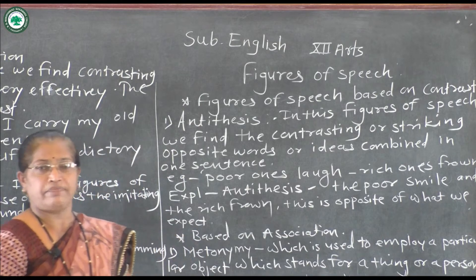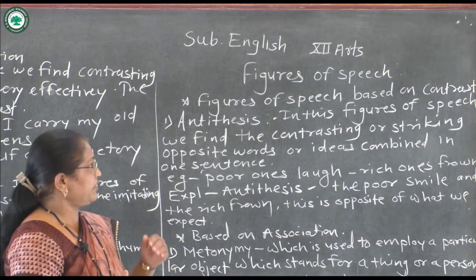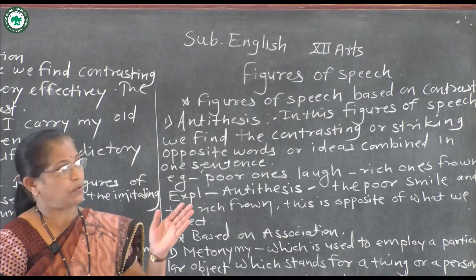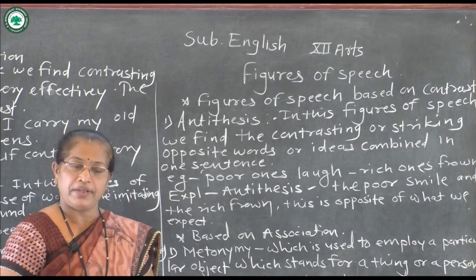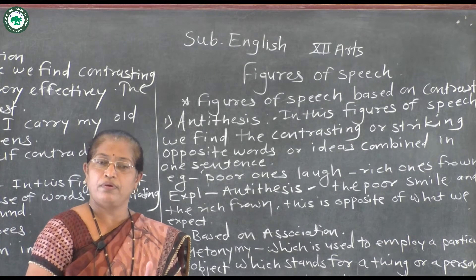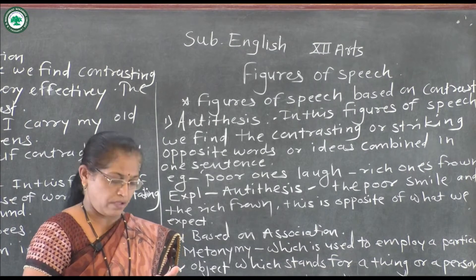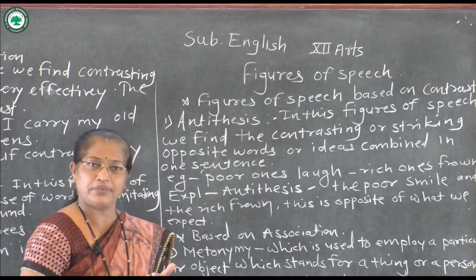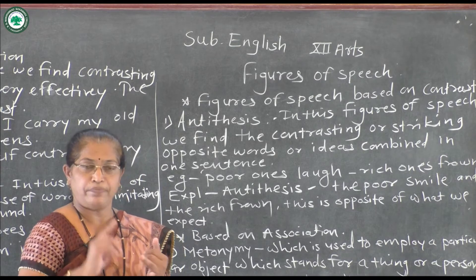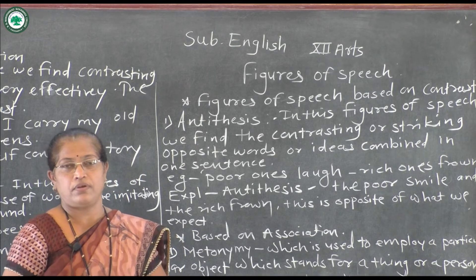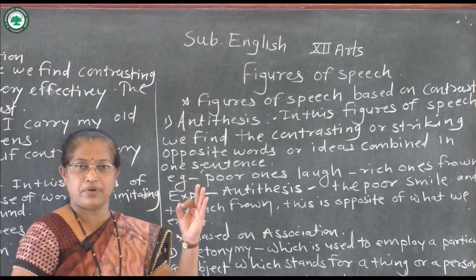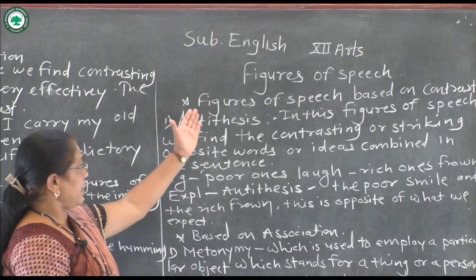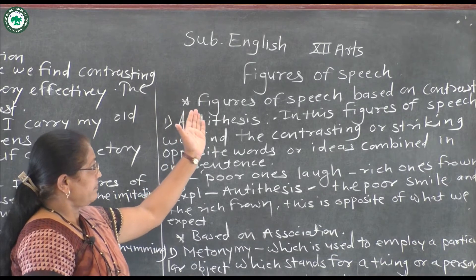In the first part we have seen figures of speech based on resemblance — figures of speech based on similarity. In that first type we have seen simile, metaphor, apostrophe, and personification. Those four figures of speech come under resemblance or similarity. Now let's see the second classified type of figure of speech.